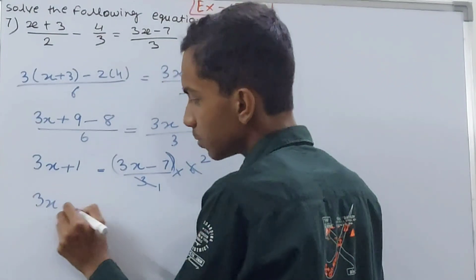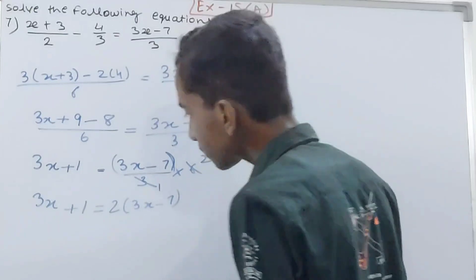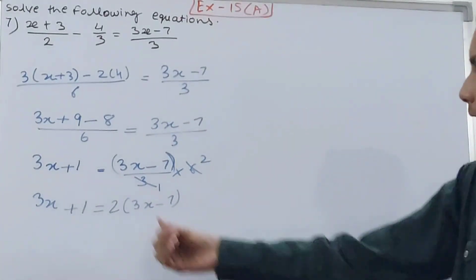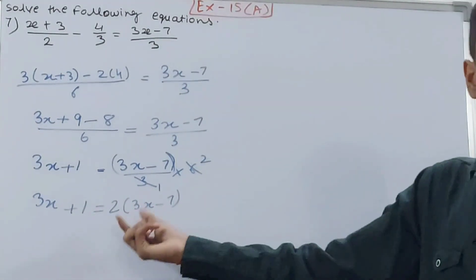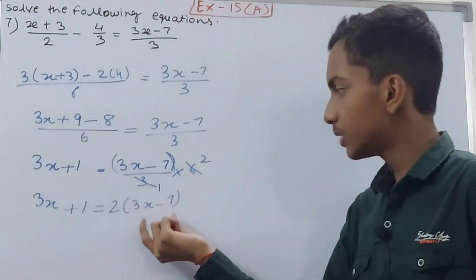Here what I can see, I have to open the bracket so that I can get the values. Remember, whenever you see a number written outside a bracket without any sign in between, that means you have to multiply. 3x+1 equals 2